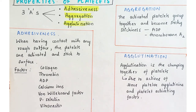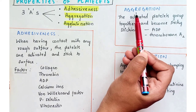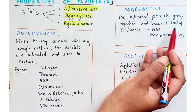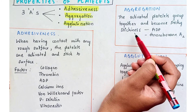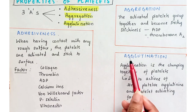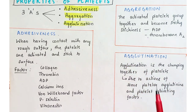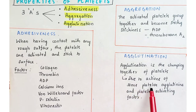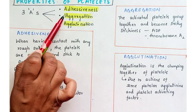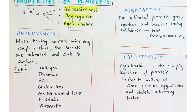These factors are all responsible for the adhesive property of platelets. Aggregation is when activated platelets group together and become sticky; ADP and thromboxane A2 are responsible for stickiness. Agglutination is the clumping together of platelets, caused by platelet agglutinants and platelet activating factor. Remember the three A's: adhesiveness, aggregation and agglutination.